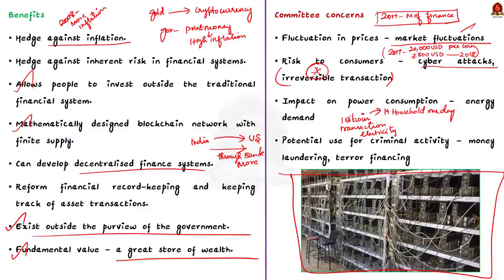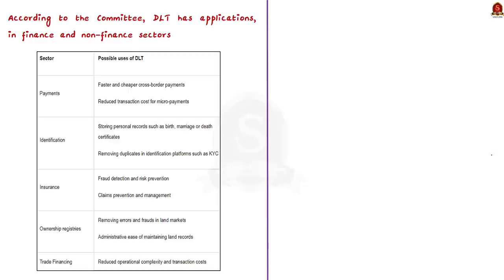A study noted by the committee estimated that 19 households in the US can be powered for one day by the electricity consumed in a single Bitcoin transaction, posing a severe threat to India's energy demand. Fourthly, there are risks of potential use for criminal activities. The Financial Action Task Force, an international organization to combat money laundering, observed in its 2014 report that virtual currencies provide greater anonymity than traditional payment systems, making them more vulnerable to money laundering and illicit terror financing.